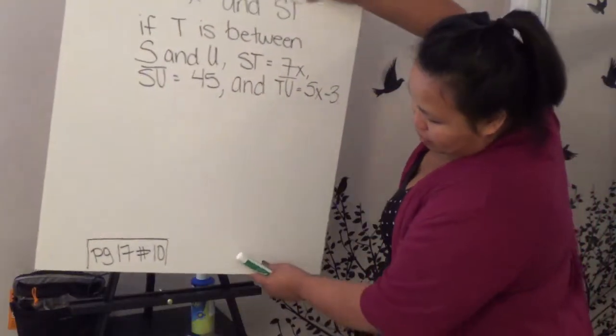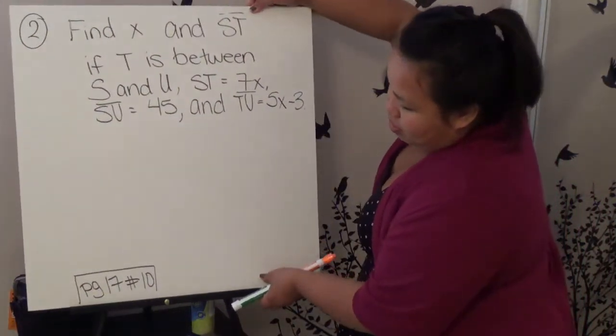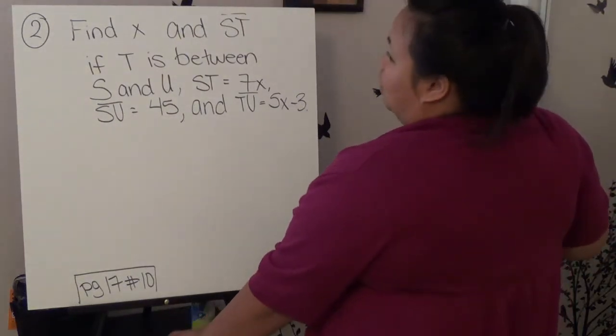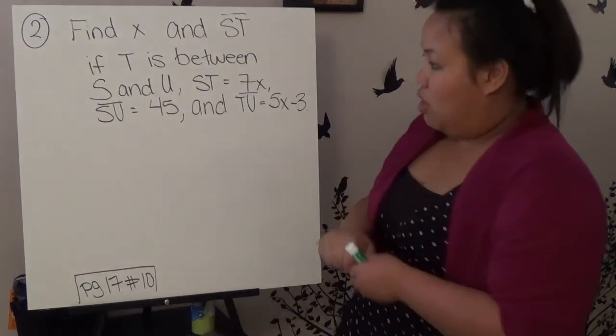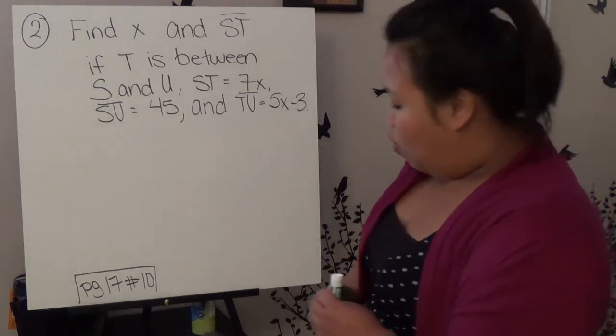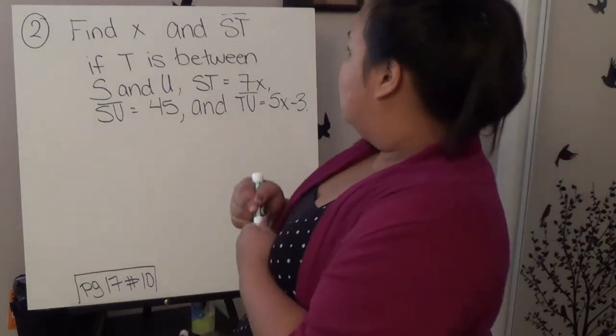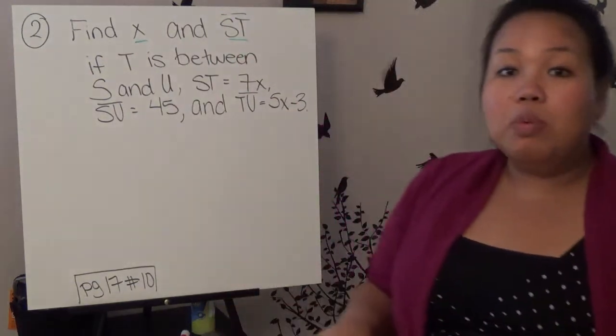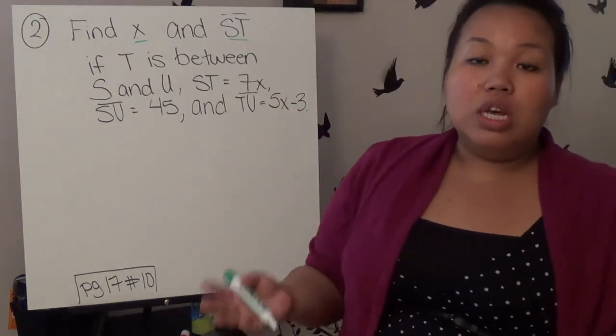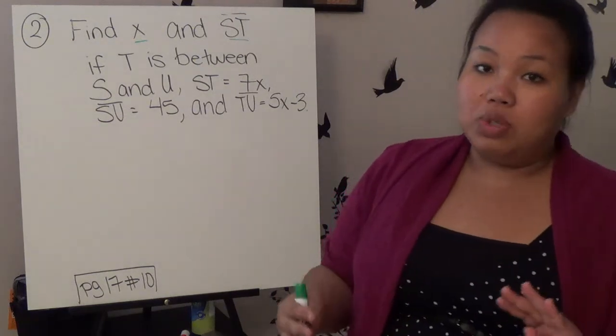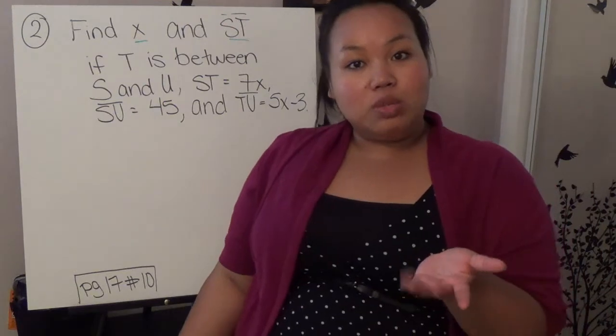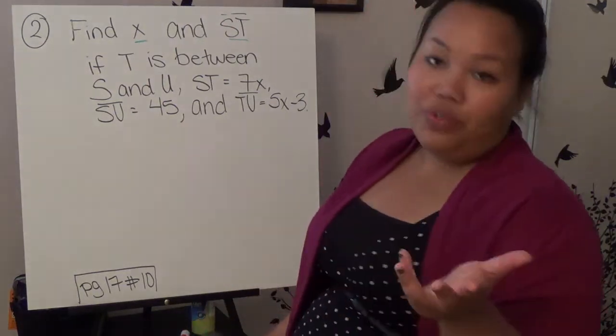The last problem we have, problem number 2, they basically want us to find X and ST, and then they're going to give us a bunch of information. So what's missing is that we need to find X and ST, but they don't give us a picture. So this one is a little bit more complicated, because we're going to draw the pictures. Sometimes in your homework chapters, they're just going to give you words, and you need to draw the pictures. Now we worked on drawing pictures before, so let's see if we can get this one.